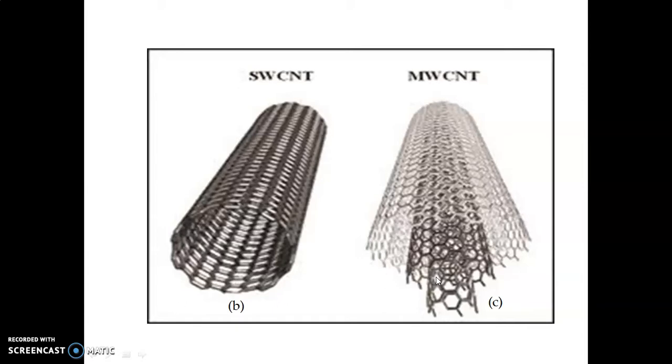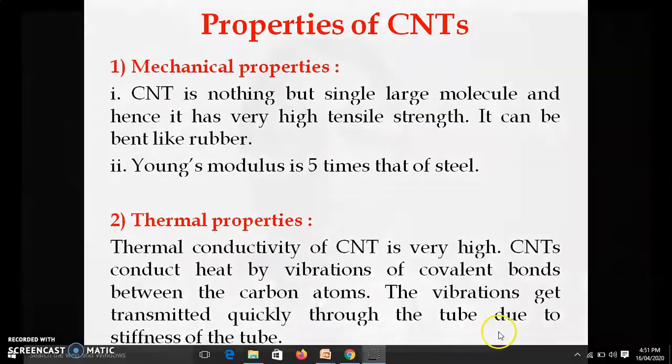To summarize: a carbon nanotube is a single molecule. Its diameter is in nanometers while its length can be in millimeters. It is a rolled-up sheet of graphene, and based on rolling direction there are three types — armchair, zigzag, and chiral — and two structural types — single-walled and multi-walled. In the next video we will discuss the properties and applications of carbon nanotubes. Thank you.